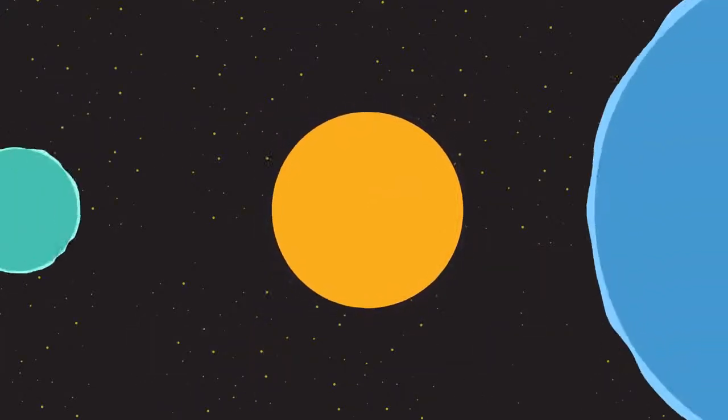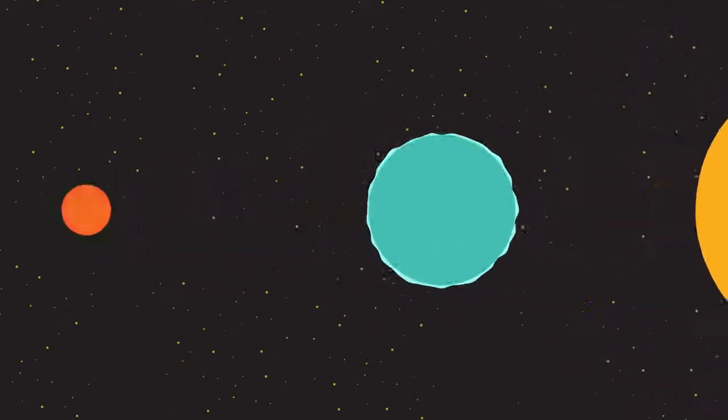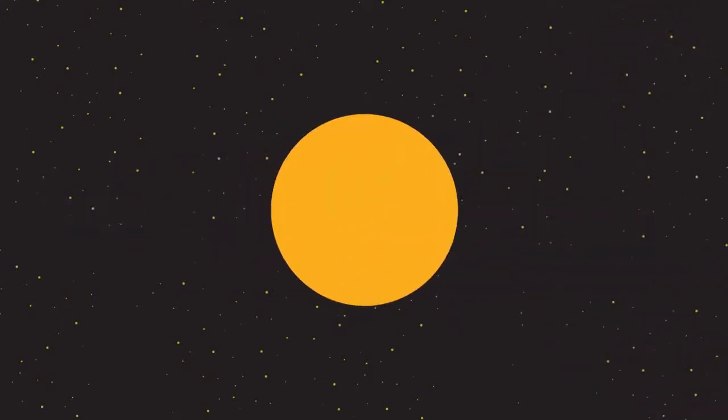What happens next depends on the size of the star. Let's talk about a smaller star first, one roughly the size of our Sun. Up until now, the nuclear fusion has been occurring between hydrogen nuclei. But eventually, the hydrogen begins to run out.